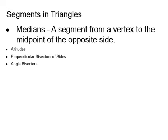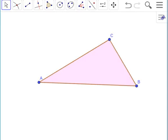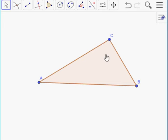A median is defined to be a segment that goes from a vertex of the triangle to the midpoint of the opposite side. Here we have triangle ABC, and we're going to construct the three medians. We can construct three because we can construct a segment from each vertex to the midpoint of the opposite side — one for all three vertices and all three opposite sides.